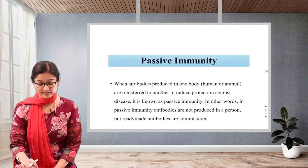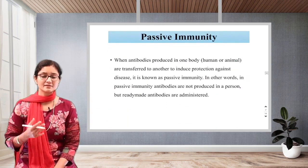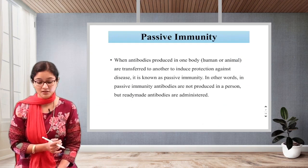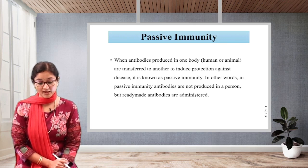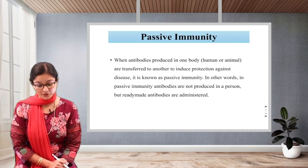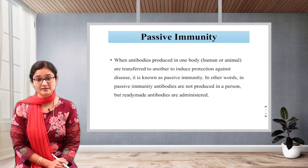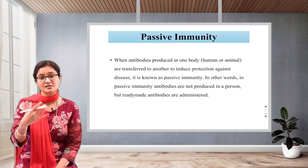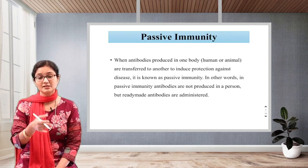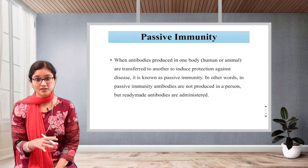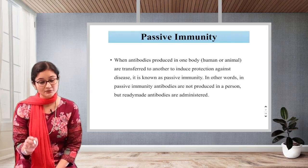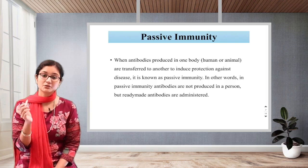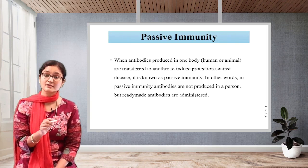Next is passive immunity. The word passive means you don't have to take much effort — it comes to you passively. When antibodies produced in one body are transferred to another to induce protection against the disease, it is known as passive immunity. Your body is not doing anything but you are getting it from someone. Most commonly, a mother gives antibodies to the child — to the infant. When antibodies are produced in one body, for example in a mother, and she is transferring it to a child, it is called passive immunity.